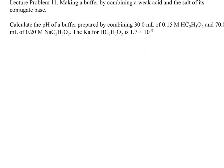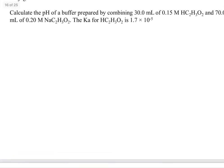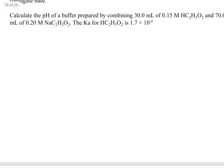We're going to take a look at Lecture Problem 11, which is making a buffer by combining a weak acid and the salt of its conjugate base. So this is that first method that we talked about at the beginning of the video. So let's take a look. This one says calculate the pH of a buffer prepared by combining 30 mL of 0.15 molar HC2H3O2, that's acetic acid, and 70 mL of 0.2 molar sodium acetate. The Ka for acetic acid is 1.7 times 10 to the minus five.